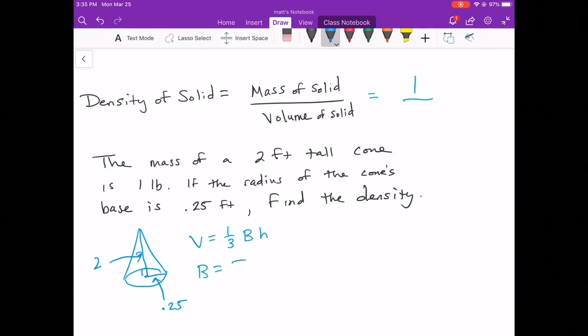The area of the base is pi r squared because the shape of the base is a circle. So that's going to be pi times 0.25 squared. And 0.25 squared is 0.0625. So we have 0.0625 pi for our area of our base. And then we already knew that the height is two.